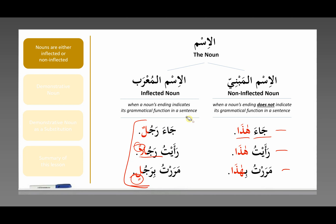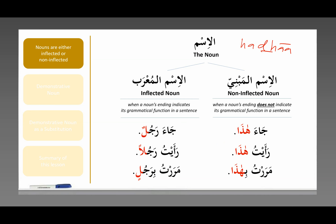Quick side note: look at the word hadha. It looks kind of odd, because it ends with a long alif — you would think it's pronounced 'hathaa.' It's not. It's 'hadha,' 'hadha' — stress on the first letter, as if you're ignoring the alif. Most words in Arabic are spelled phonetically — you pronounce them as they look. This is one of the few words that is not like that. Just something to note when you look at the word hadha.